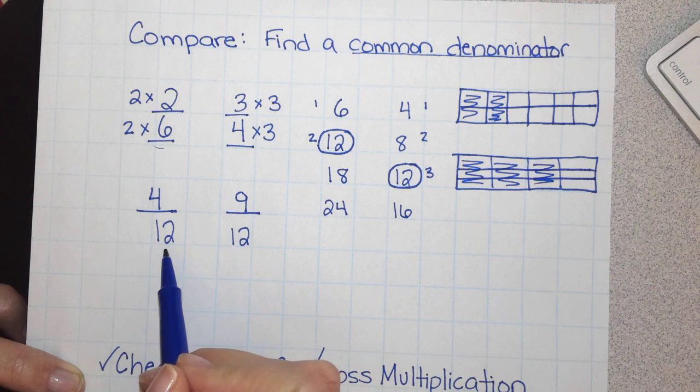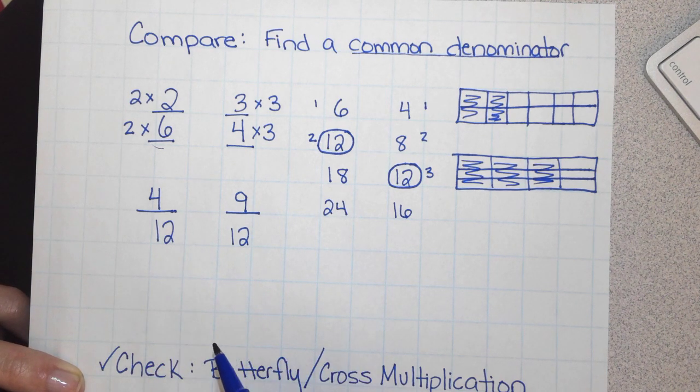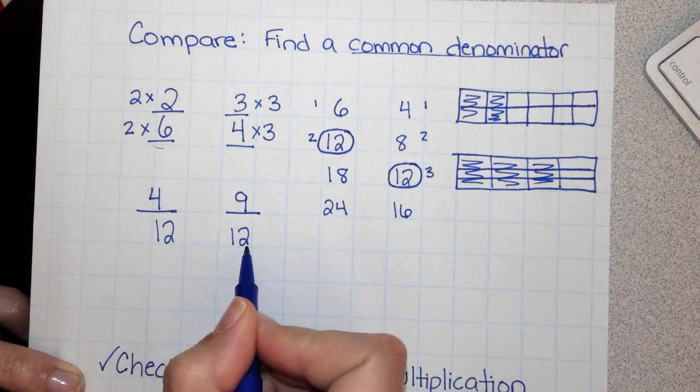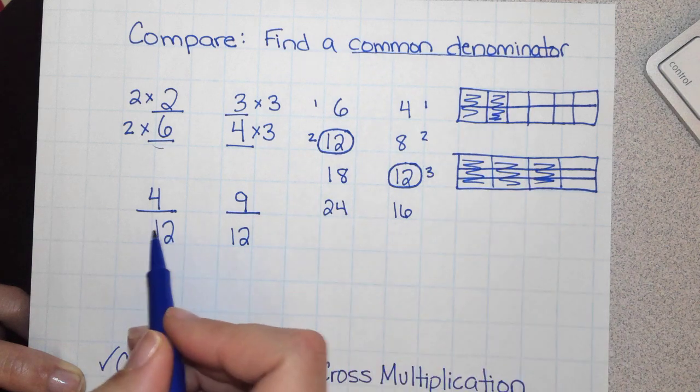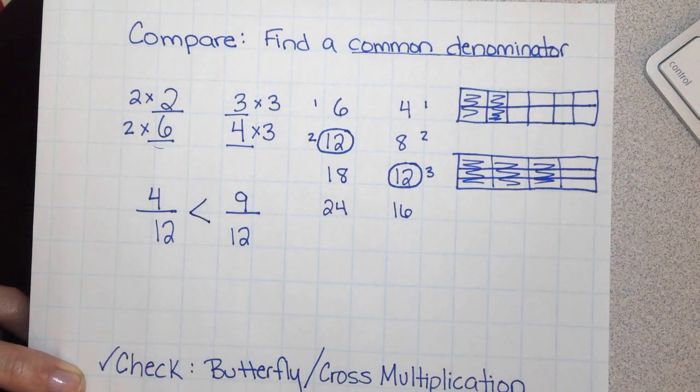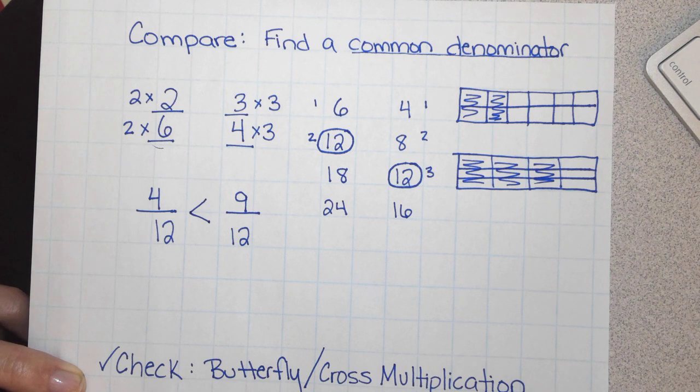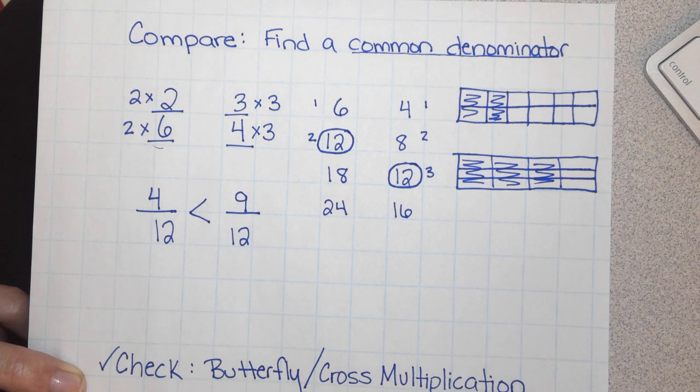So now that they have a common denominator, it is easy for me to see which one is greater. They have the same number of parts in their total, but this one only has 4 shaded in. This one would have 9. So 9 twelfths is greater than 4 twelfths. Or I would read this, 4 twelfths is less than 9 twelfths.